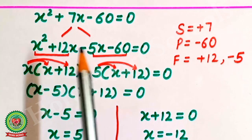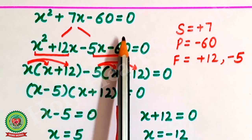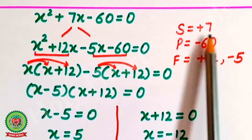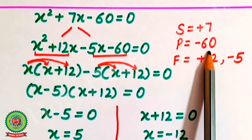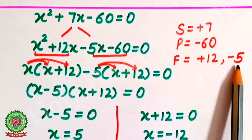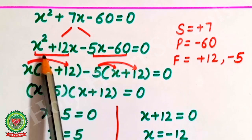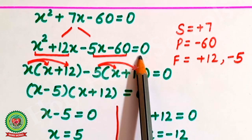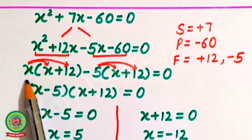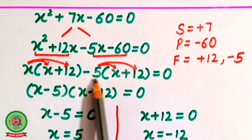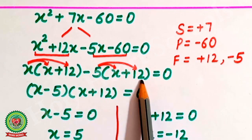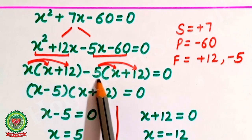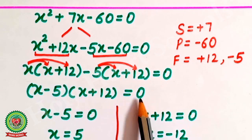The equation x squared plus 7x minus 60 equals 0 is a quadratic equation. The sum is plus 7, the product is minus 60, and the factors are plus 12 and minus 5. Splitting the term: x squared plus 12x minus 5x minus 60 equals 0. After pairing and taking common: x(x plus 12) minus 5(x plus 12) equals 0, giving (x plus 12)(x minus 5) equals 0.